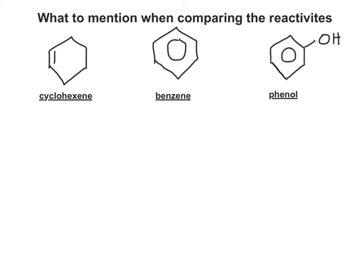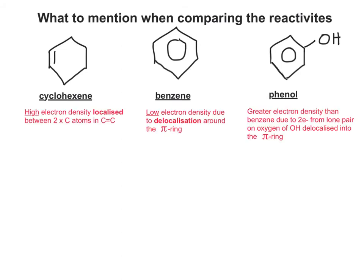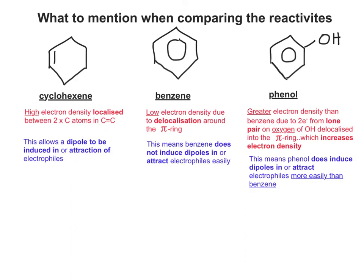Let's quickly recap by looking at what we need to talk about if you were asked to discuss this in a longer answer question. The first thing to talk about is electron density. With cyclohexene, you have high electron density localised between two carbon atoms in the carbon-carbon double bond. For benzene, you have low electron density due to delocalisation around the pi ring. With phenol, you need to say that it has greater electron density than benzene due to two electrons from the lone pair on the oxygen of the OH being delocalised into the pi ring, which in turn increases the electron density.